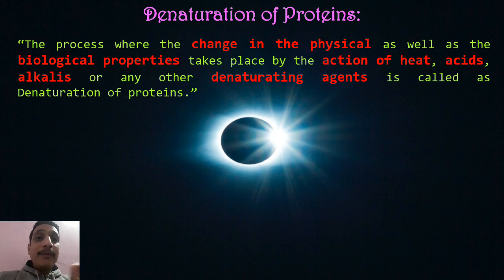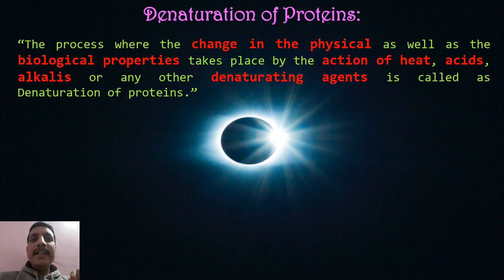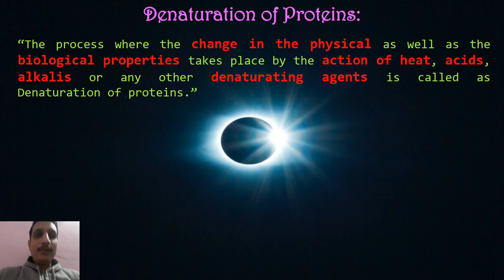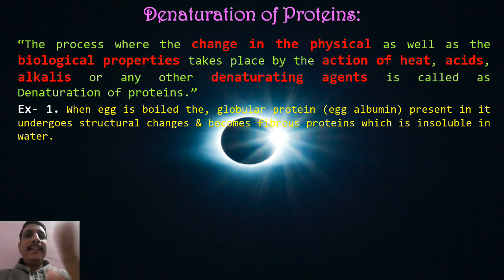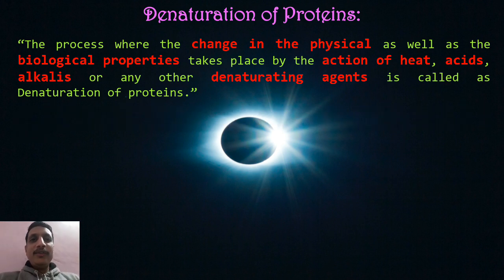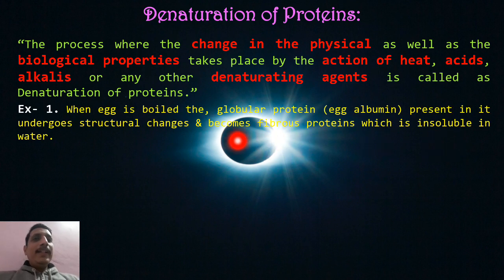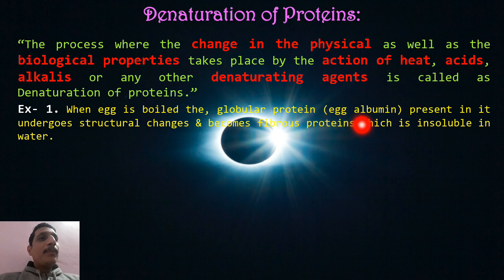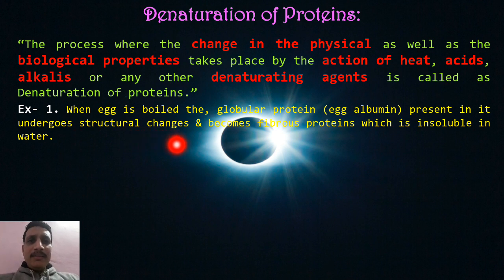When a protein undergoes the action of heat, acid, alkali, or any denaturing agent, the process is called denaturation. What happens when an egg is boiled? The egg contains egg albumin protein, which is a globular protein. That globular protein undergoes structural change when the egg is boiled — there is a biological property change.